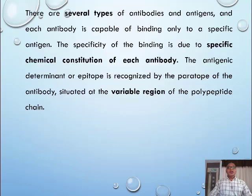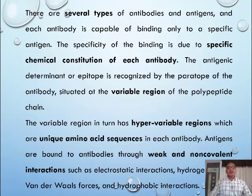There are several types of antibodies and antigens, and each antibody is capable of binding only to a specific antigen. The specificity of the binding is due to specific chemical antigen-antibody reaction. The antigenic determinant or epitope is recognized by the paratopes of the antibody situated at the variable regions of the polypeptide chain. The variable region in turn has hypervariable regions which are unique amino acid sequences in each antibody.